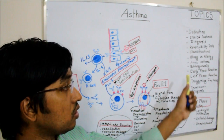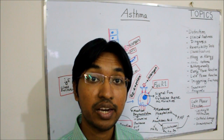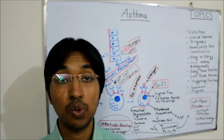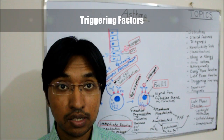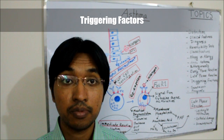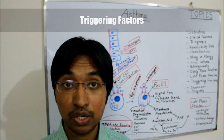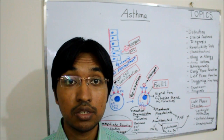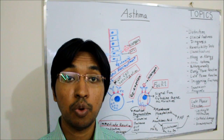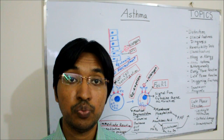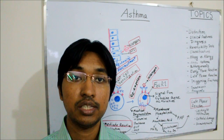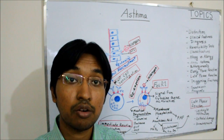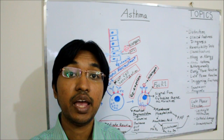The triggering factors of asthma vary by individual, but common ones include house dust mite, cold weather, exercise, emotion, pollen, animal dander, certain drugs such as beta-blockers, NSAIDs, and aspirin, certain foods, certain occupations, chemicals, smoking, infection, and Aspergillus fumigatus. In many cases the triggering factors are poorly defined and cannot be identified in every scenario.